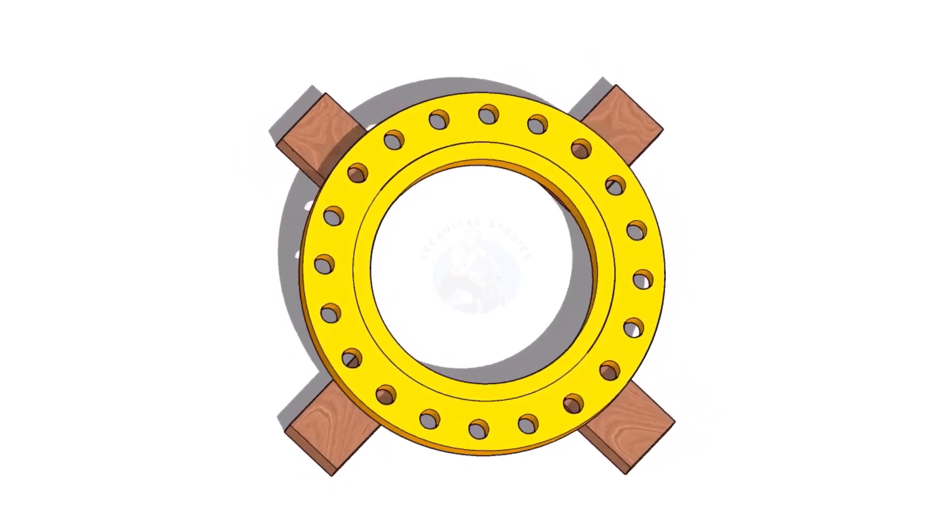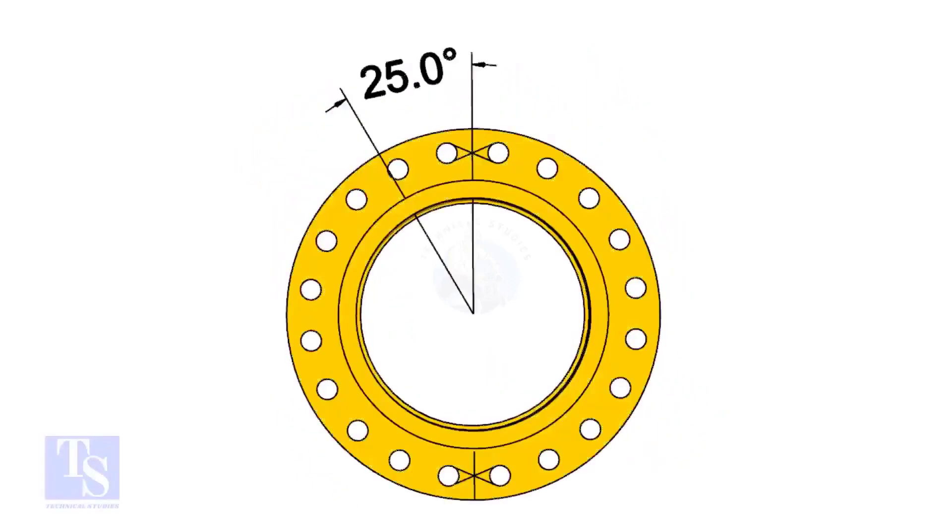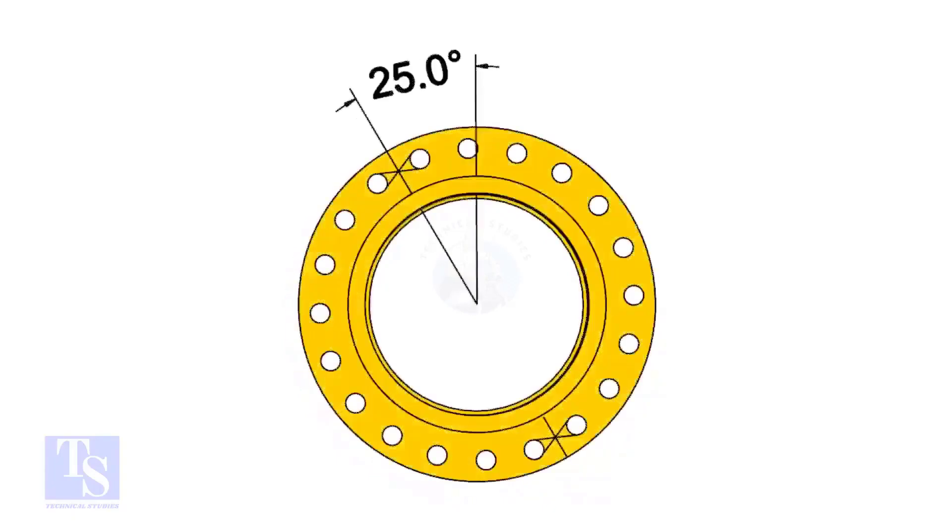The pipe and the flange size is 16 inch, and the flange will rotate 25 degree anticlockwise. Hope you all know the difference between clockwise and anticlockwise rotation.